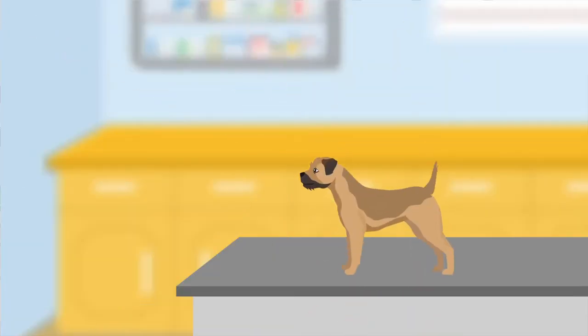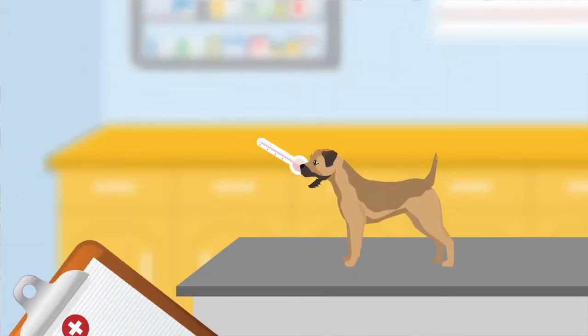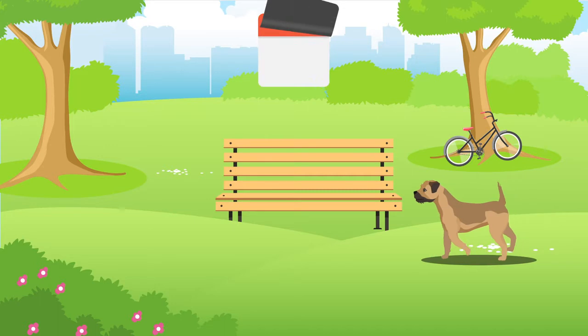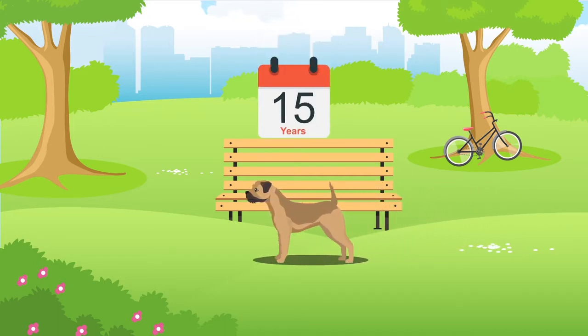They can be susceptible to a number of health issues, for example, autoimmune conditions, heart defects and patellar luxation. On average, Border Terriers will generally live between 12 and 15 years, but of course their lifespan will be subject to their health, lifestyle and wellbeing.